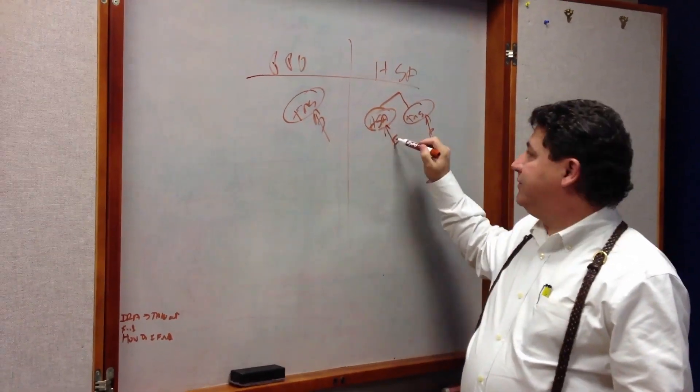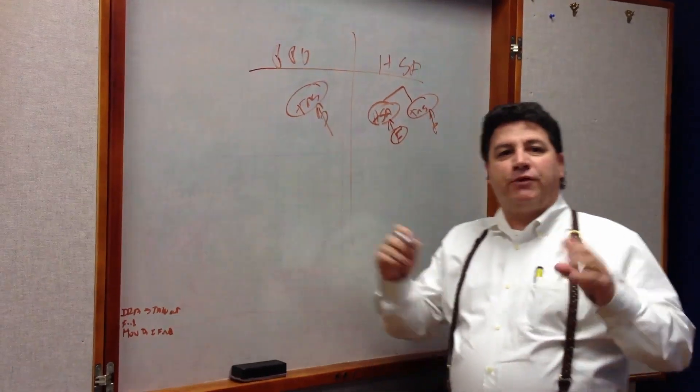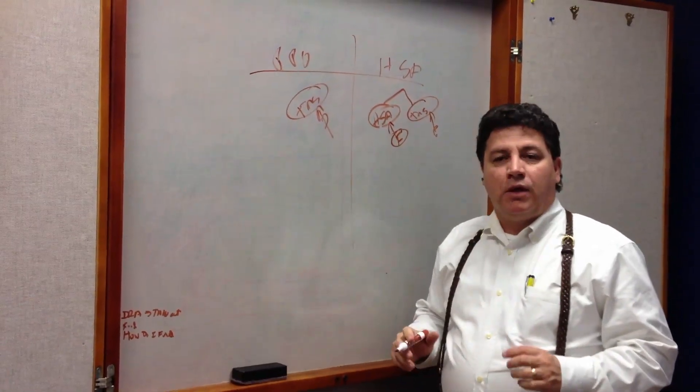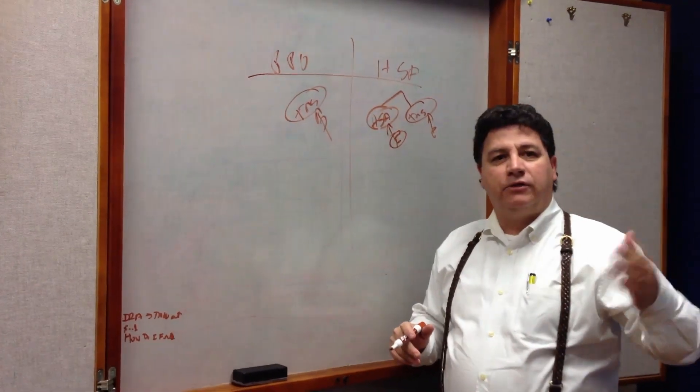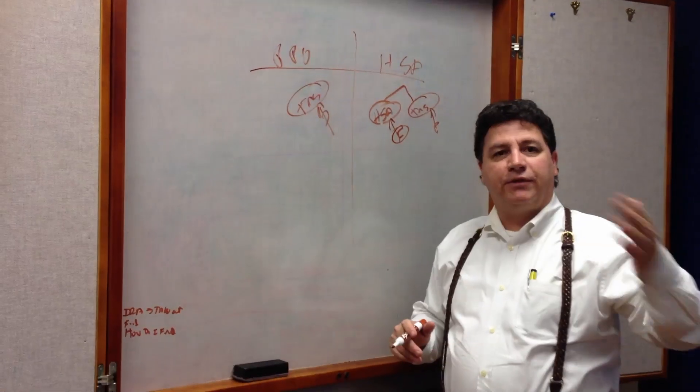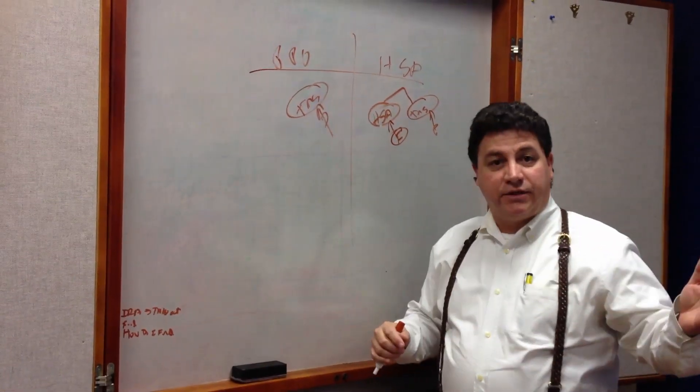The big question people have is, how do I fund this? There's about three different strategies people use. One is, every month, they pick a number—$20, $50, $100—and they put it into their HSA month after month after month, and they grow that HSA.